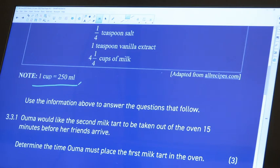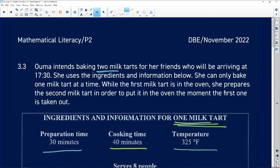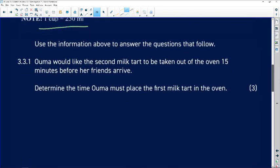3.3.1: Ouma would like the second milk tart to be taken out of the oven 15 minutes before her friends arrive. So we know her friends are arriving at half past 5, we've been given that information there, but she would like that milk tart to at least be out of the oven 15 minutes before they arrive.